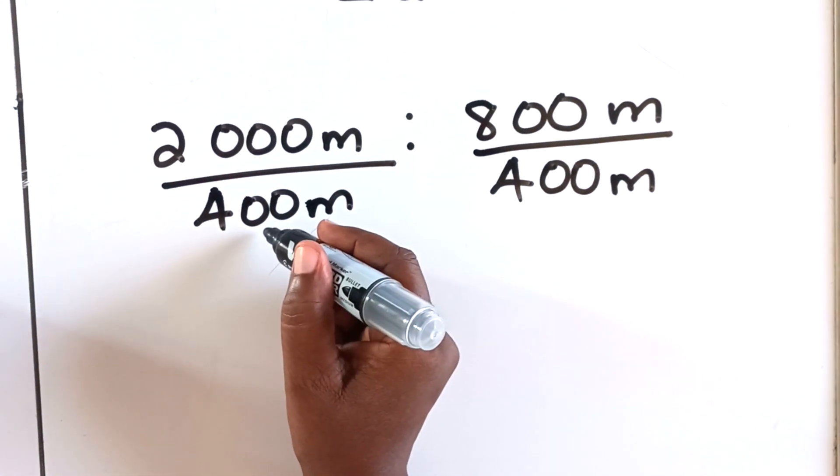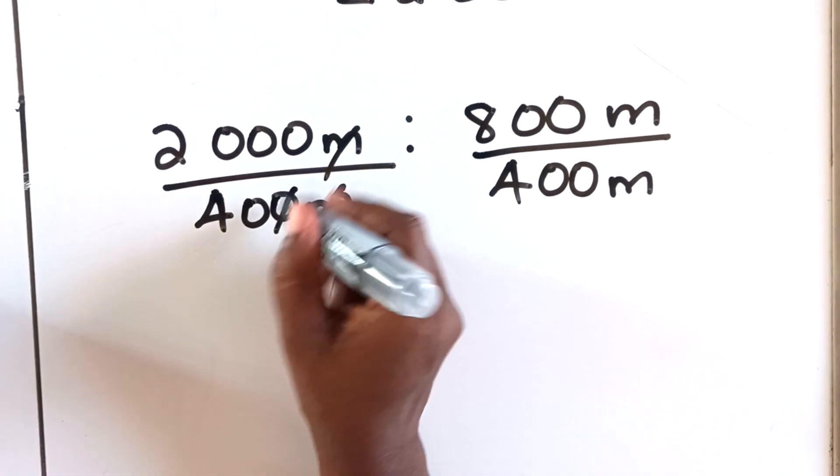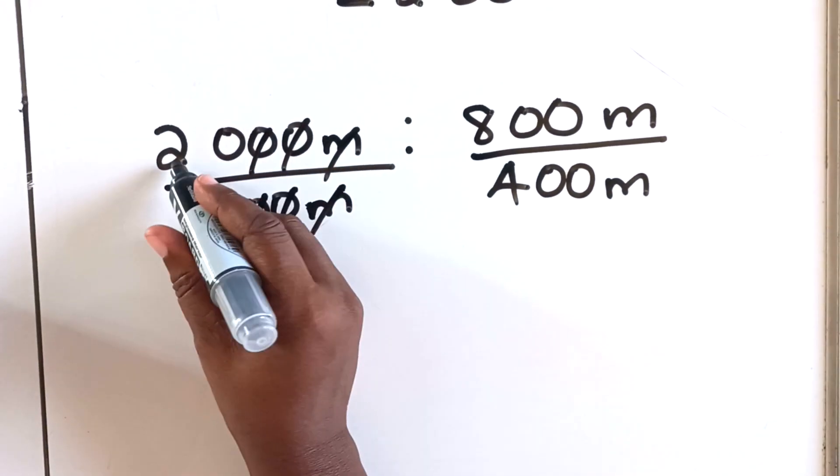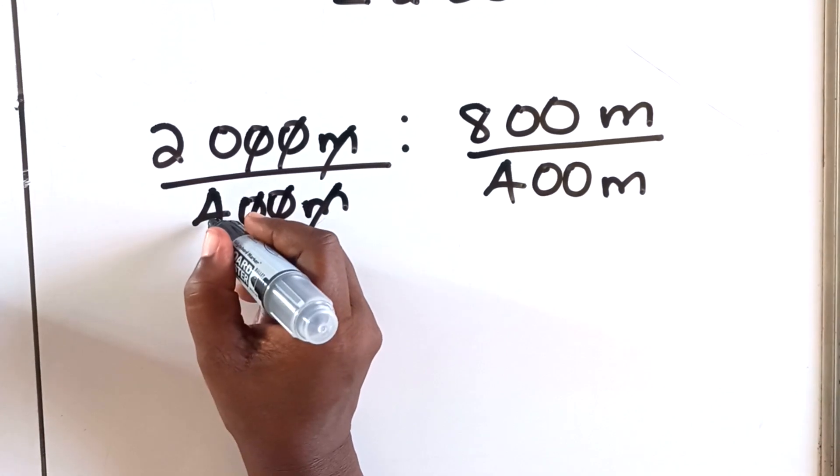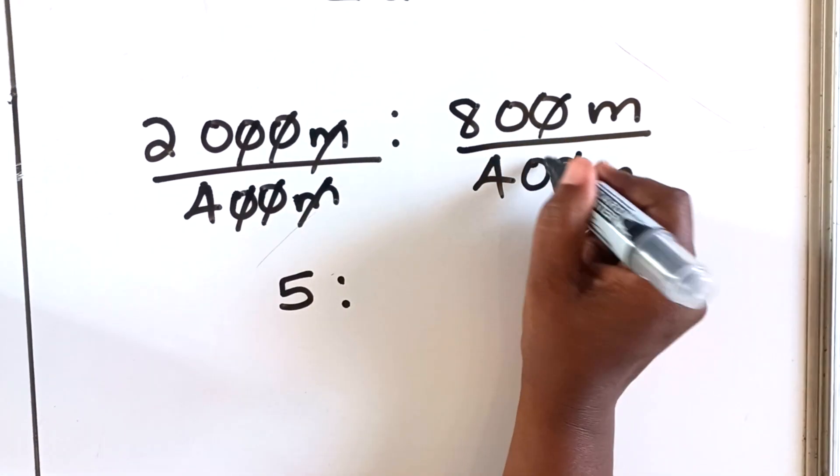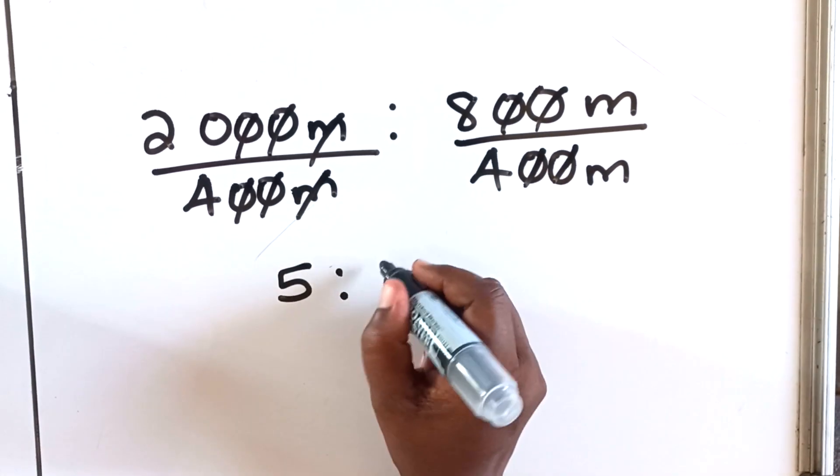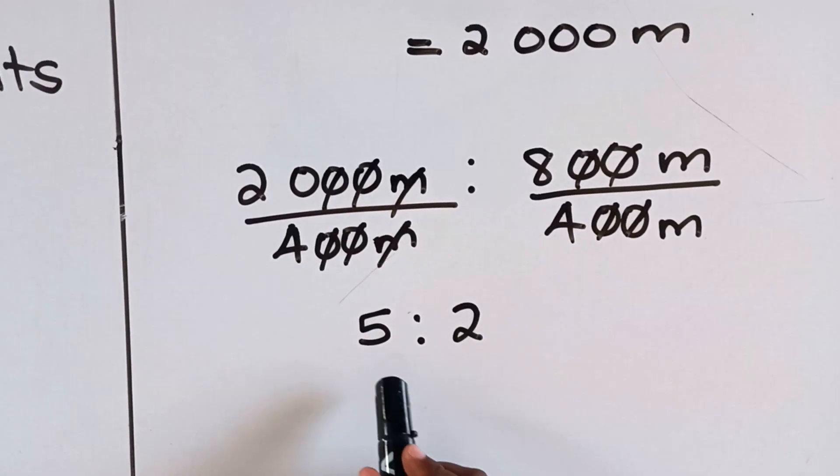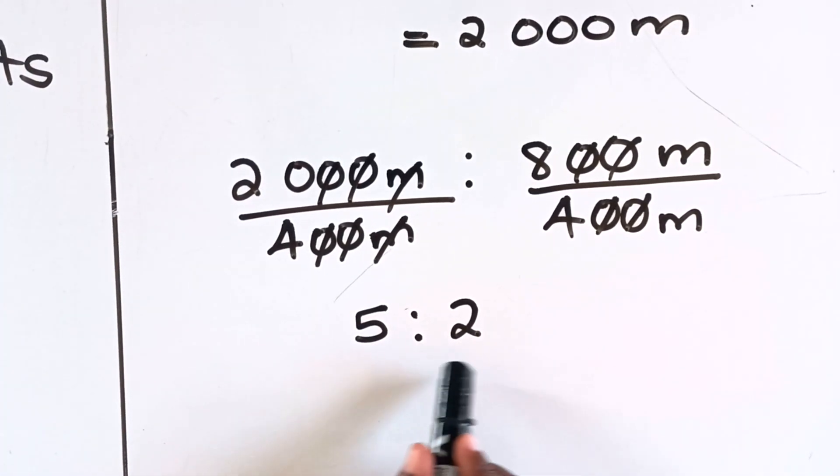Divide by 400. The meters will cancel on both sides. 2000 divided by 4 is 5, 800 divided by 4 is 2. So now the ratio that we got is 5 is to 2.